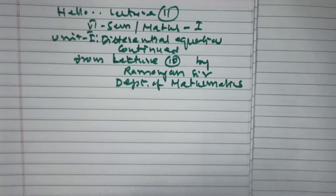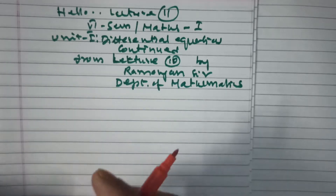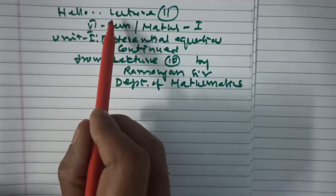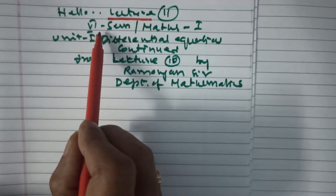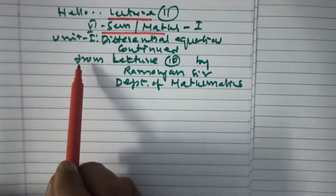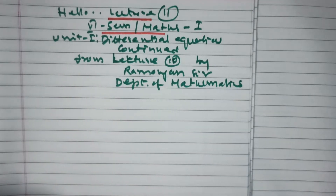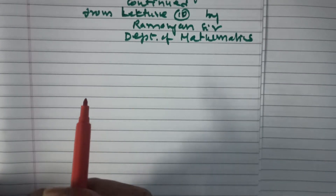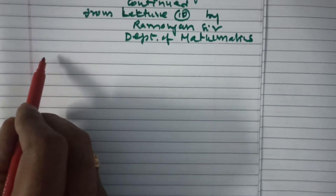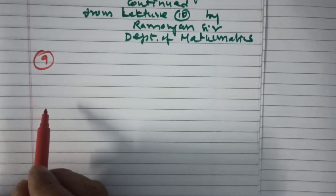In lectures 7, 8, 9, and 10 — particularly in lecture 10 — we discussed a few problems based on simultaneous differential equations in 3 variables. In lecture 10, we discussed problems up to the 8th problem, whereas the 9th problem of the same type — simultaneous differential equations in 3 variables — is to be taken up now.